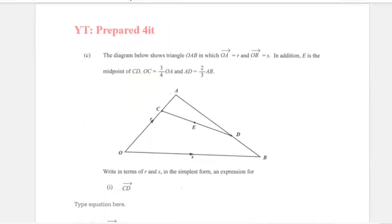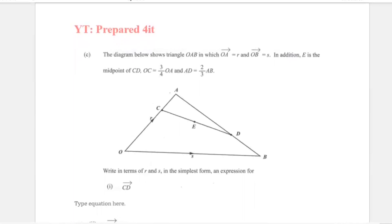Part C: the diagram shows triangle OAB in which OA equals R, OB equals S. E is the midpoint on line CD, OC is 3 quarters of OA, and AD is equal to 2 thirds of AB. They want us to write in terms of R and S the simplest form expression for CD.